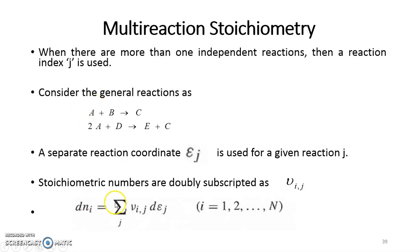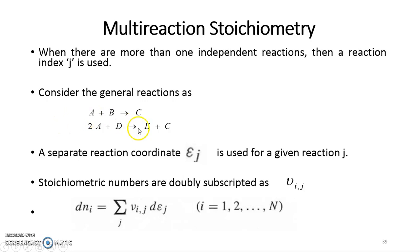The change in number of moles of any species — say, for example, A — is equal to the change in extent of reaction for each individual reaction, like epsilon 1 for the first and epsilon 2 for the second, multiplied by the stoichiometric coefficient of that species in the jth reaction. For A in the first reaction, it is 1, so it is 1 times epsilon 1 plus in the second reaction it is 2 times epsilon 2. For B, which is present only in reaction 1, the stoichiometric coefficient for reaction 2 would be 0.